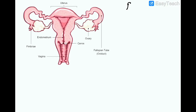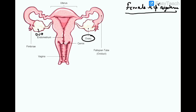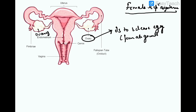Now let us talk about the female reproductive system. It consists of a pair of ovaries. The main function of the ovary is to release an egg, which is the female gamete. One egg is released by one ovary every month. The next part is the fallopian tube, and inside the fallopian tube, fertilization of sperm and egg takes place.